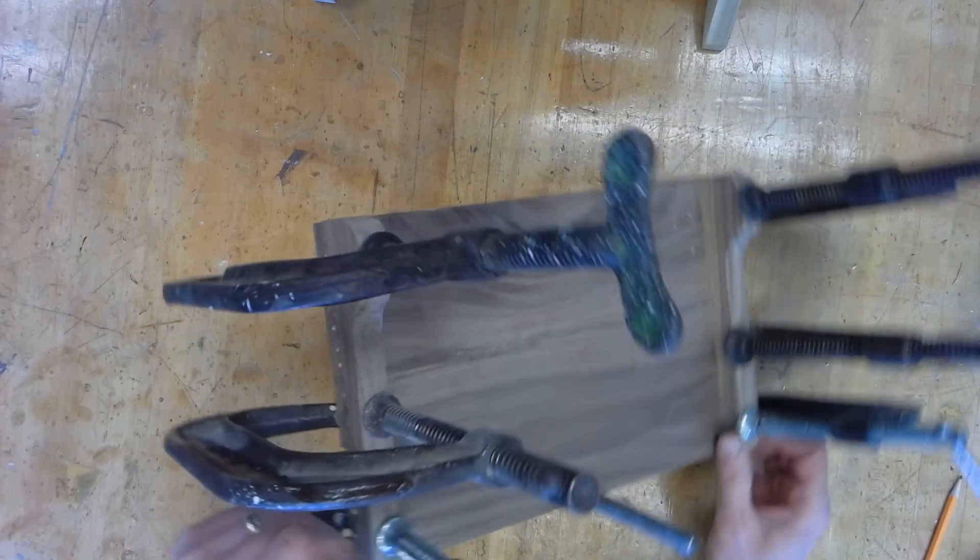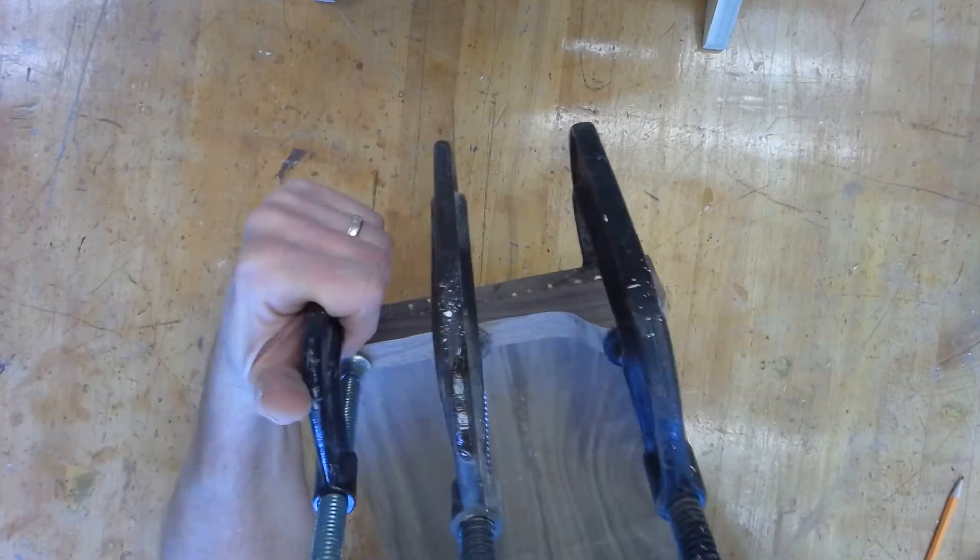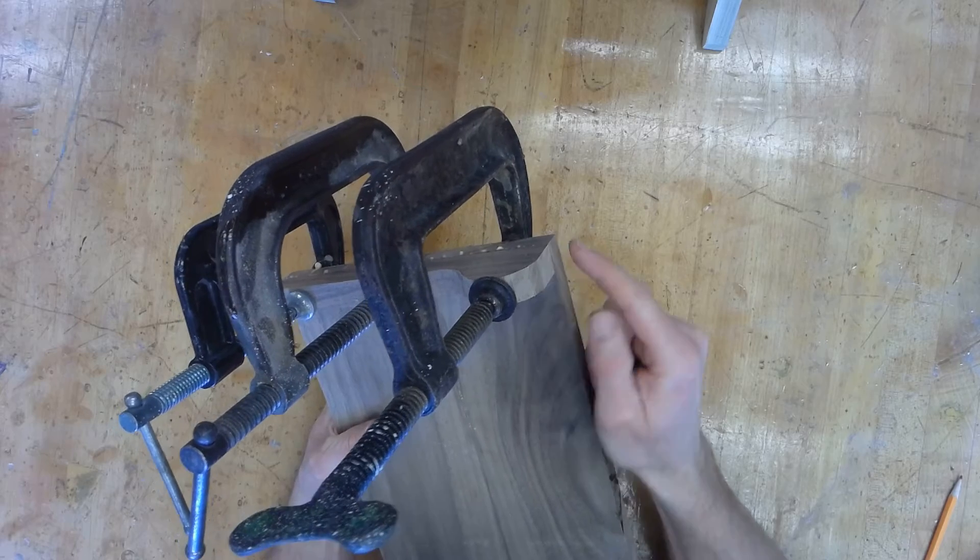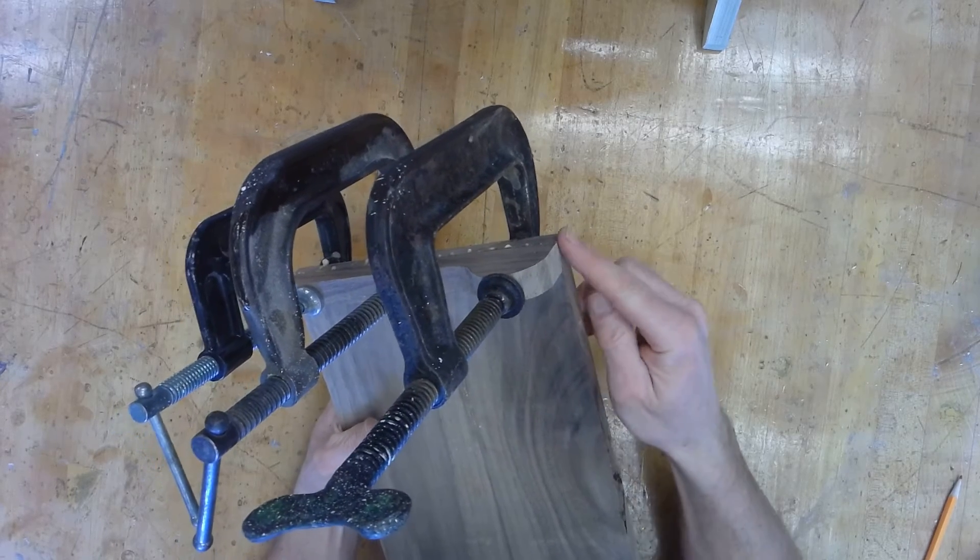When we put the C-clamps on, just keep in mind, again I'll say it, the back is supposed to be nice and flush with this back edge.